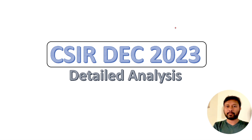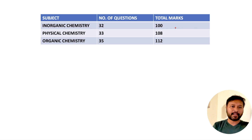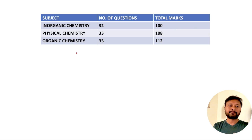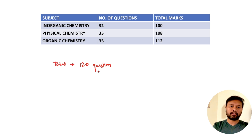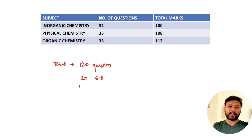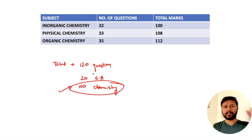This is going to be a detailed analysis of the CSIR December 2023 exam, and it is super important for preparation of the next exam. Let's dig into the details and understand how the exam was different from others. Starting with the number of questions and total marks — you have a total of 120 questions in the exam, of which 20 are general aptitude questions from general English and aptitude, and 100 questions are from chemistry.